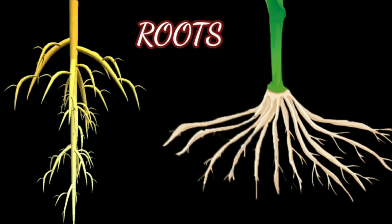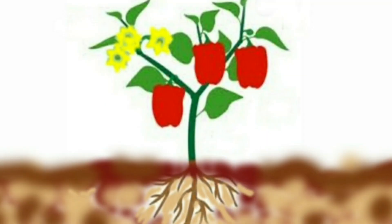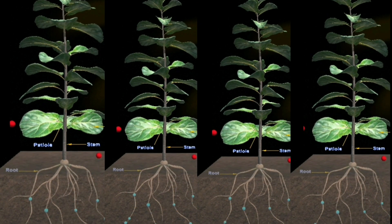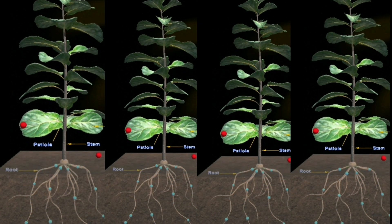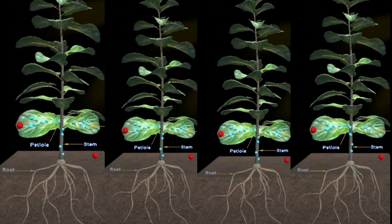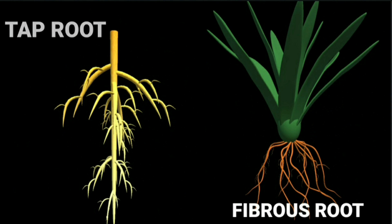Roots of plants. Roots grow deep inside the soil. They look like long strands spread out under the soil. Roots hold the plant firmly in the soil. They also help the plant absorb water and nutrients from the soil. The roots of a plant grow below the ground. There are two types of roots: taproot and fibrous root.